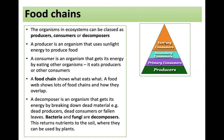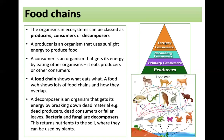Decomposers return nutrients to the soil where they can be used by plants. Here's an example of a food web — it looks much more complex than a food chain. You can follow it to see who eats who. Right at the top, you can see wolves, mountain lions, and cats.